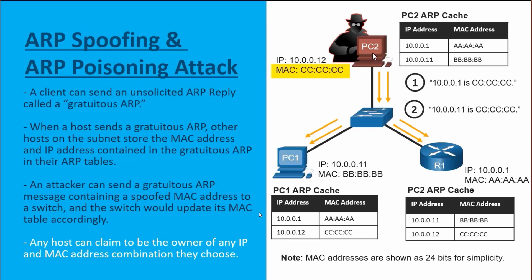The threat actor PC2 also sends out a gratuitous ARP claiming that 10.0.1.1 — the IP address of PC1 — is reachable with MAC address all-C's, which is again the attacker. So when PC1 sends data to the 100.1 IP address, it'll be sending it at Layer 2 to the attacker, which is all-C's. When the attacker receives this data, it'll be using it as a man-in-the-middle attack.